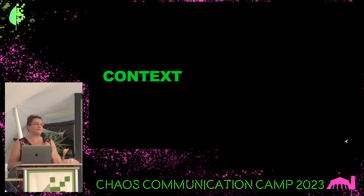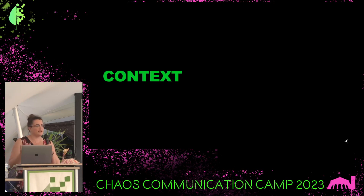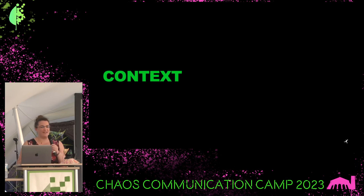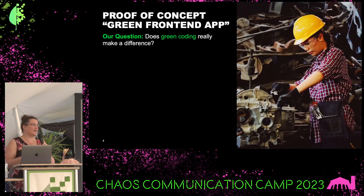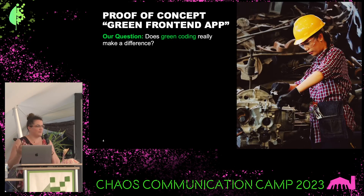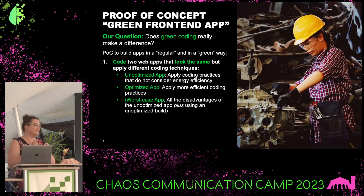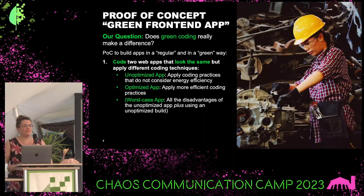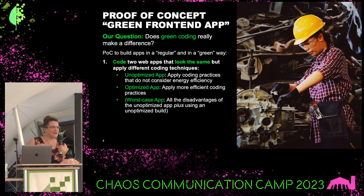So last year, we spent a lot of time researching recommendations on how to optimize code and what saves more energy. And so this year, we said we want to get our hands dirty, we want to try this out. Does it really make a difference? So we said we are going to do a proof of concept around green coding for the question: does green coding really matter? And our idea was we are going to build a frontend app in two ways — in a green, optimized way, and in a normal, standard way. We did end up doing it in three ways because we got curious and said if we really want to create the worst case, how bad can it get? But the talk is not about this at all.